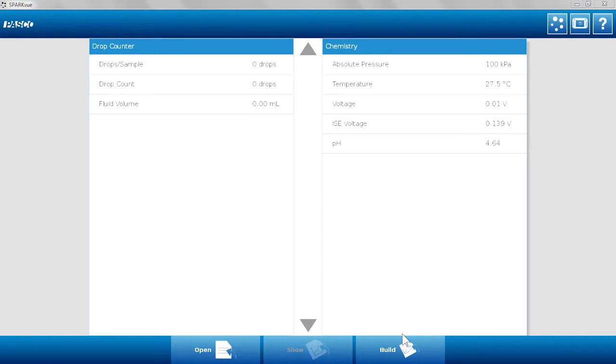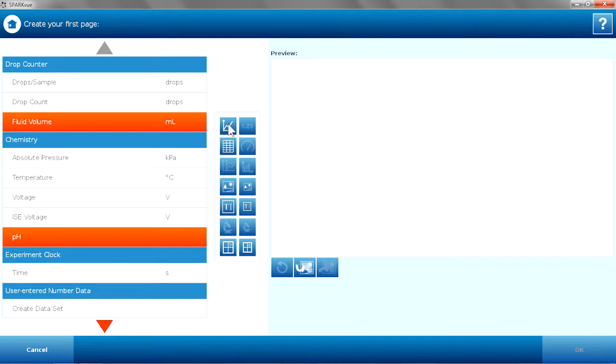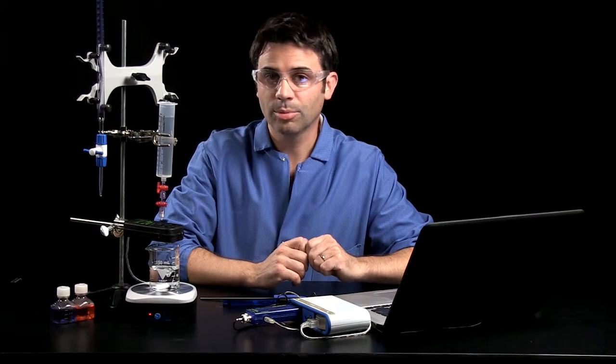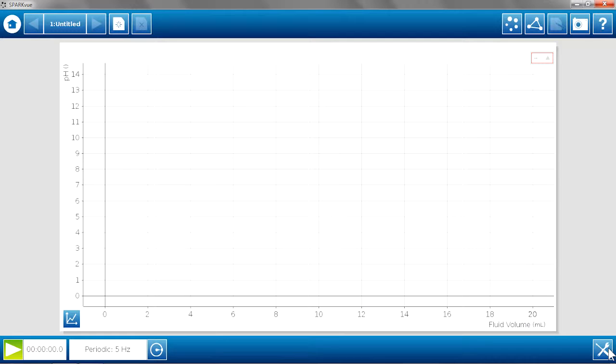I'm going to build a graph, build a page of pH versus fluid volume. Now with any titration, you want to do some calibrations beforehand. You want to calibrate the pH meter, and to calibrate in SPARC, you go to the tools.